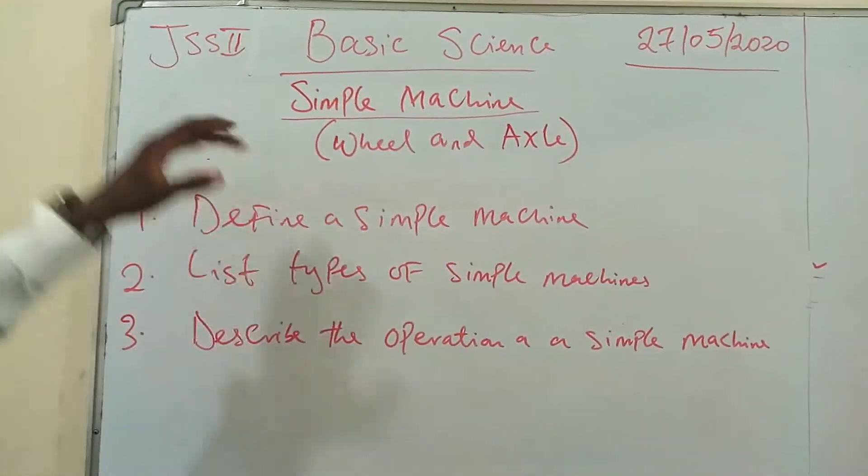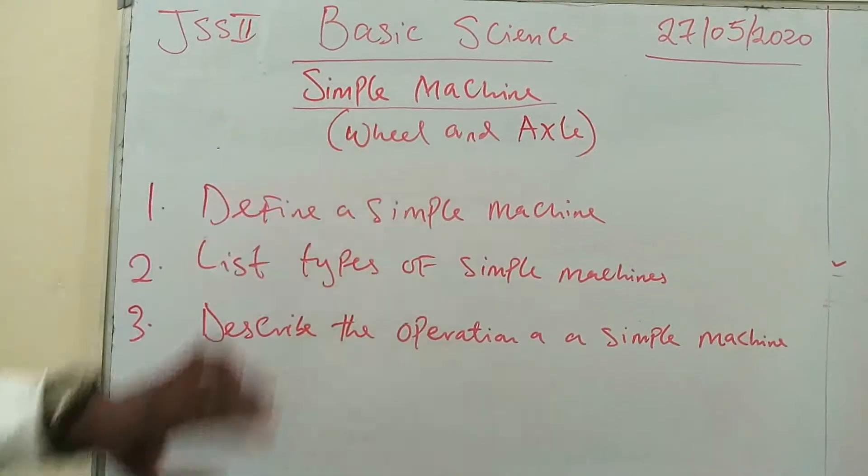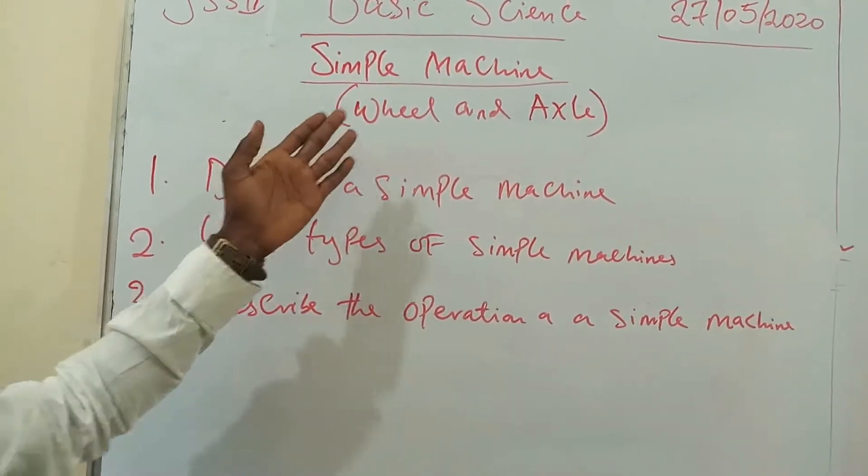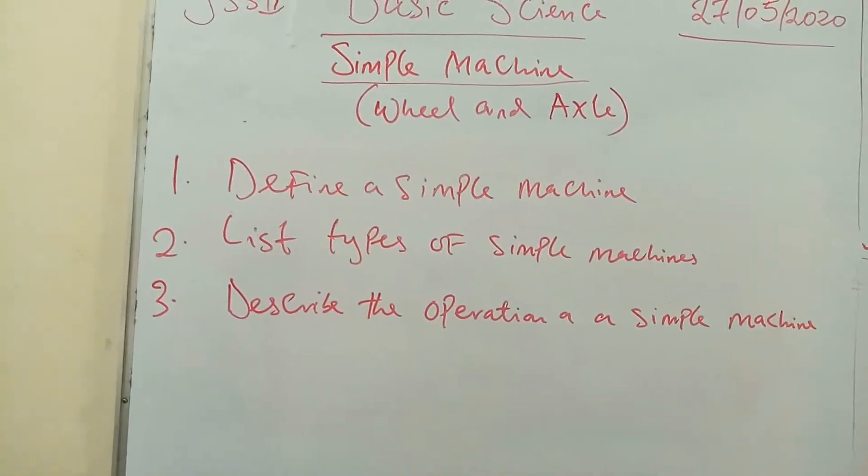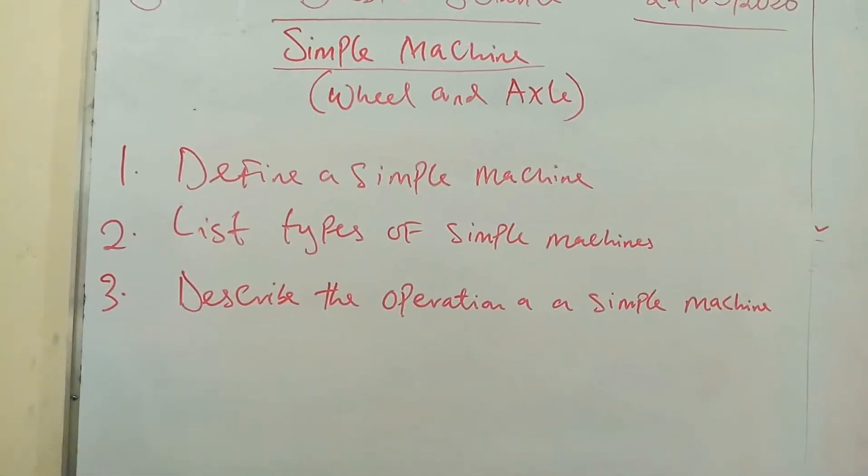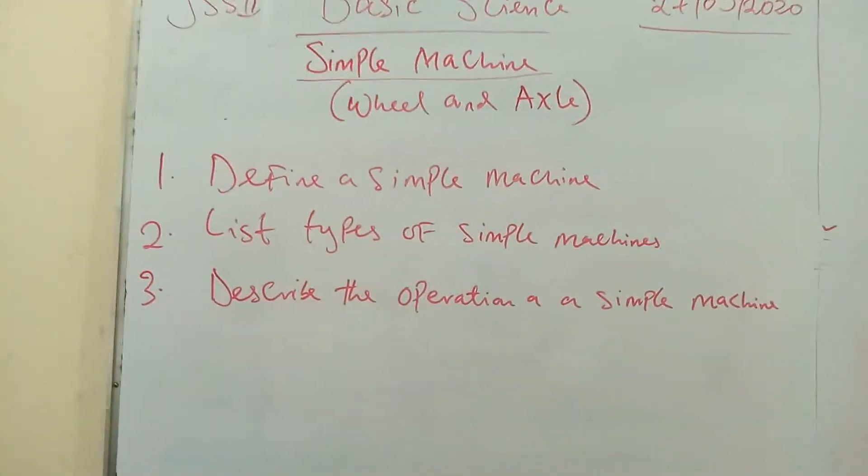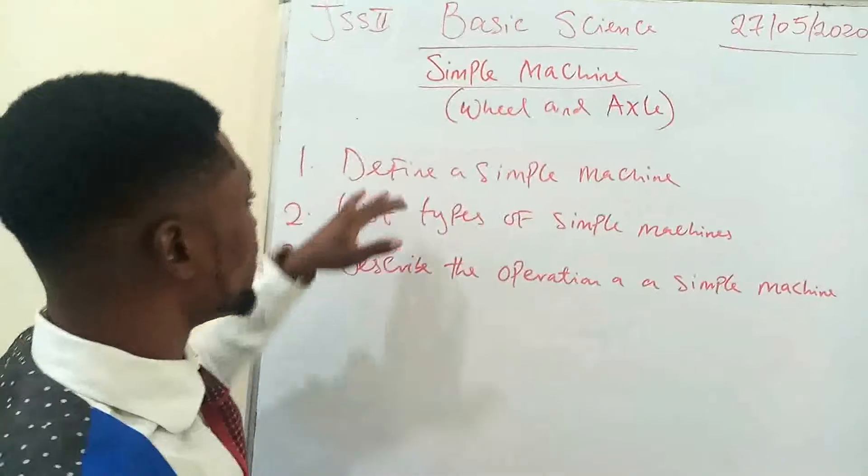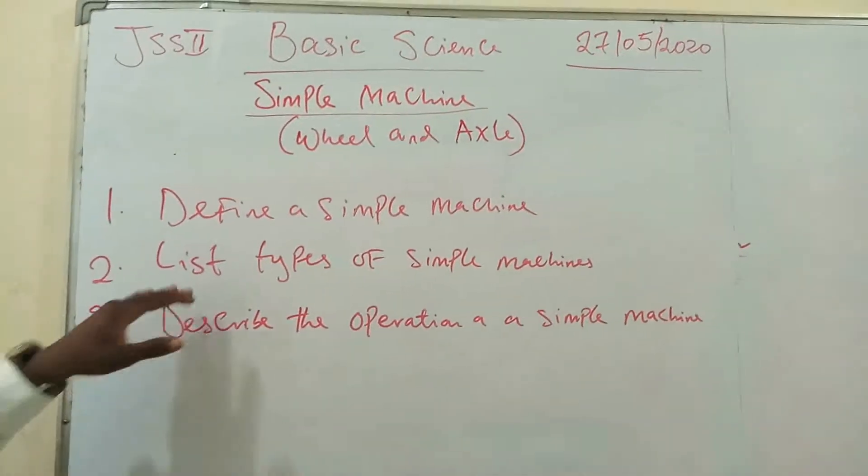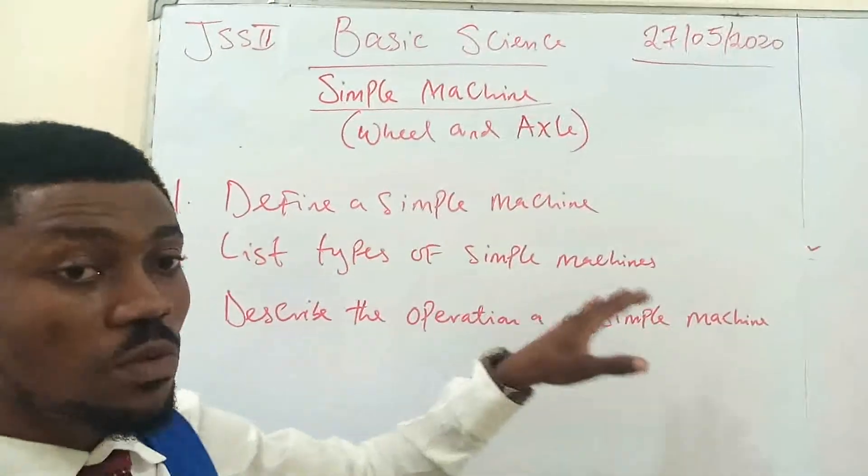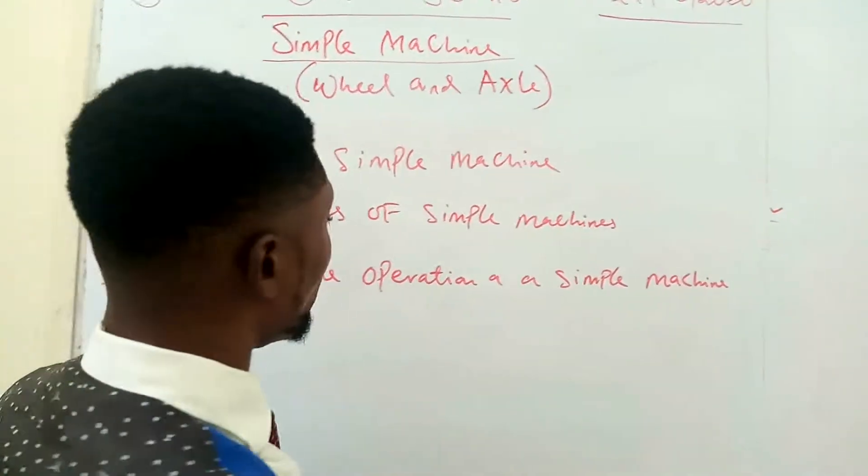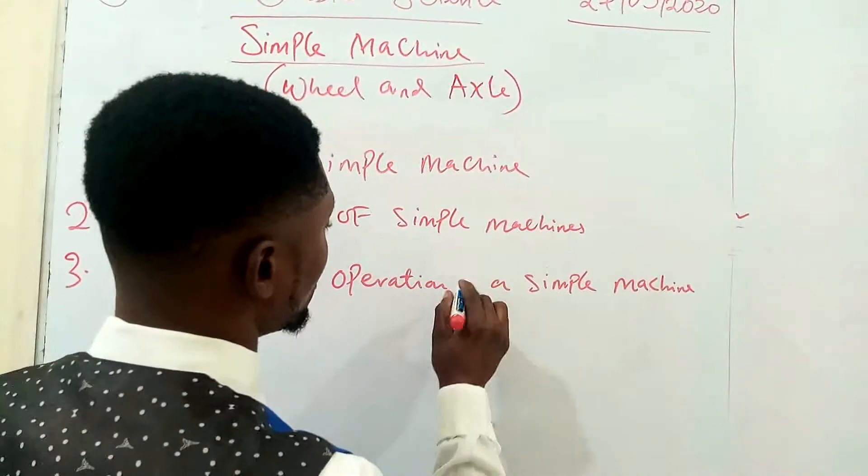This class is for JS2, basic science JS2. And we have a topic here, simple machine, otherwise known as wheel and axle. For the purpose of this lesson, we are going to learn how to define a simple machine, list types of simple machines, and describe the operation of a simple machine.